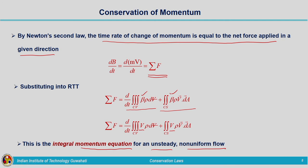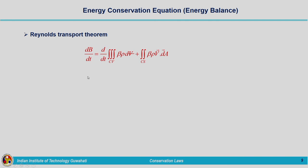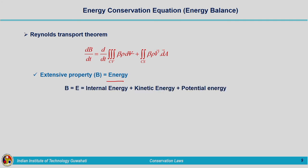Now the next principle is conservation of energy — the energy conservation equation or energy balance equation. Reynolds transport theorem — I am repeating again. Here in this case we need to check what is our extensive property and the corresponding intensive property. The left hand side is the time rate of change of extensive property of the system. So extensive property B is energy, because we are going to derive the energy conservation equation — definitely our extensive property is energy.